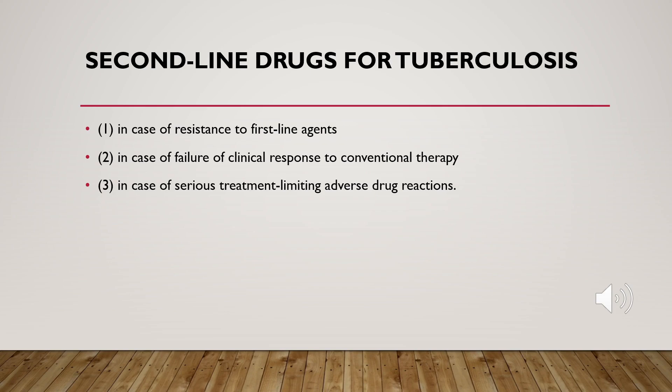The drugs mentioned — isoniazid, rifampicin, pyrazinamide, ethambutol, and streptomycin — are all called first-line drugs for tuberculosis. We also have second-line drugs.